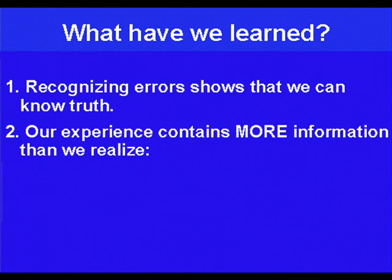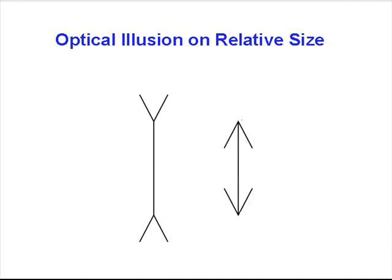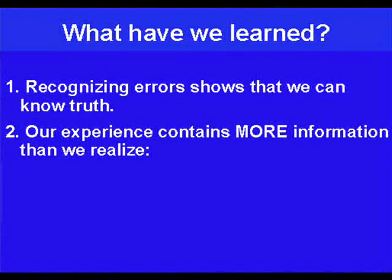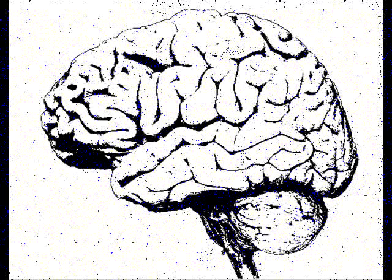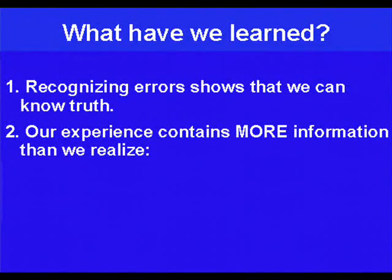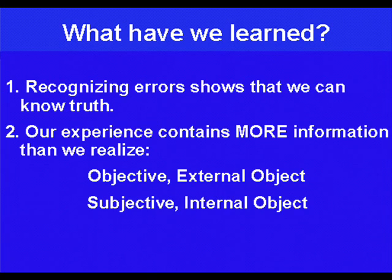Second, our experience contains more information than we realize. We thought we were just looking at the picture of the two lines, but the experience we had contained not only information on the two lines, but information on how we ourselves process data. The external object, we can call an objective object, while the internal object, the information about ourselves, we can call a subjective object.